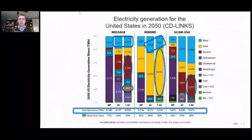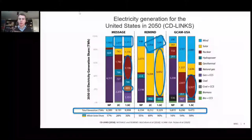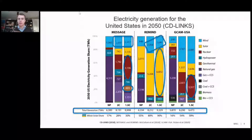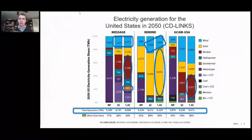In a model like MESSAGE, there is kind of static wind deployment going from 2°C to 1.5°C, with some reliance on nuclear power and a little bit of biomass as well, raising questions about biomass competition for power. Looking at REMIND, we see a decline in wind deployment going from 2°C to 1.5°C, which is being taken up by a large amount of solar deployment, raising questions about the viability of that amount of solar and whether there is storage to support it and what other mechanisms are in play for renewable integration.